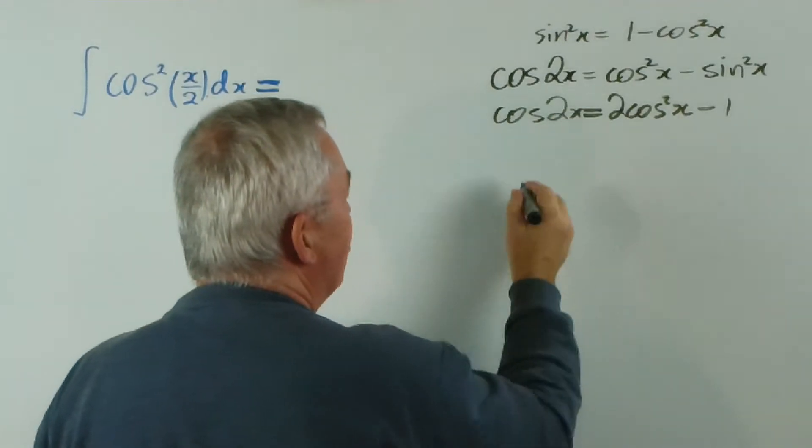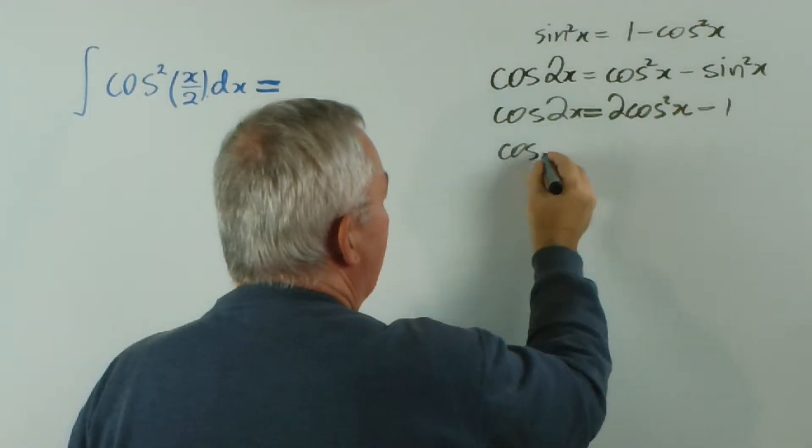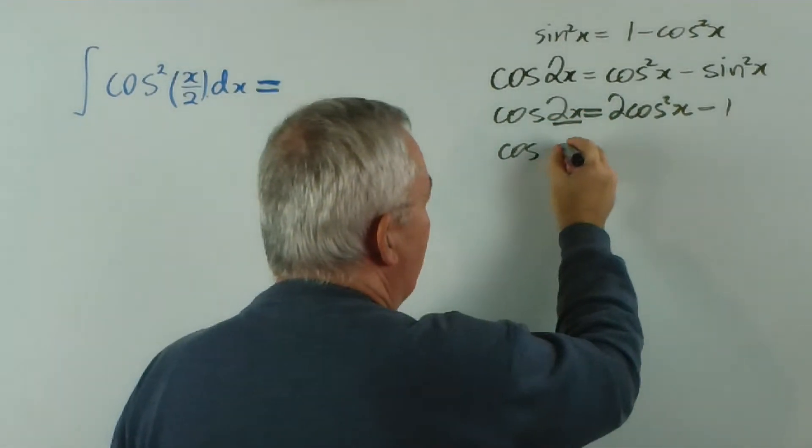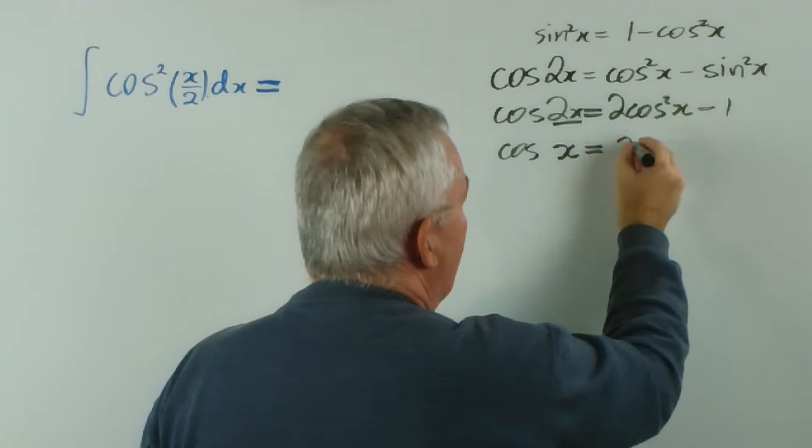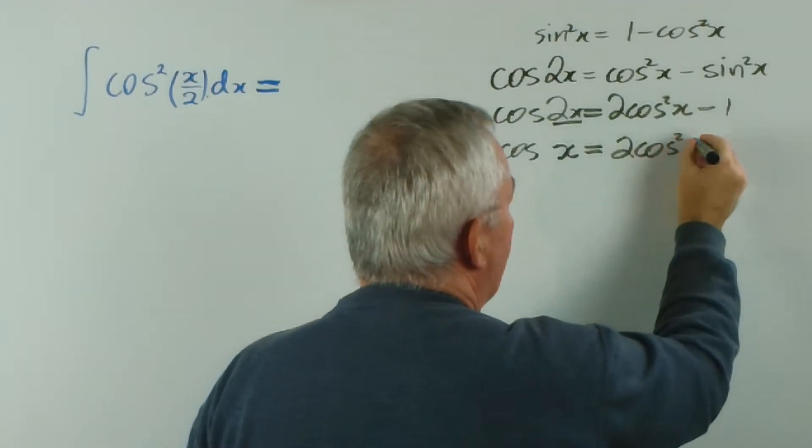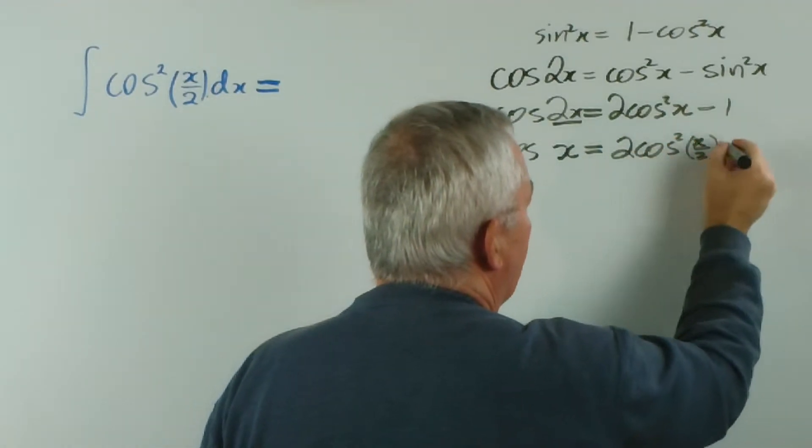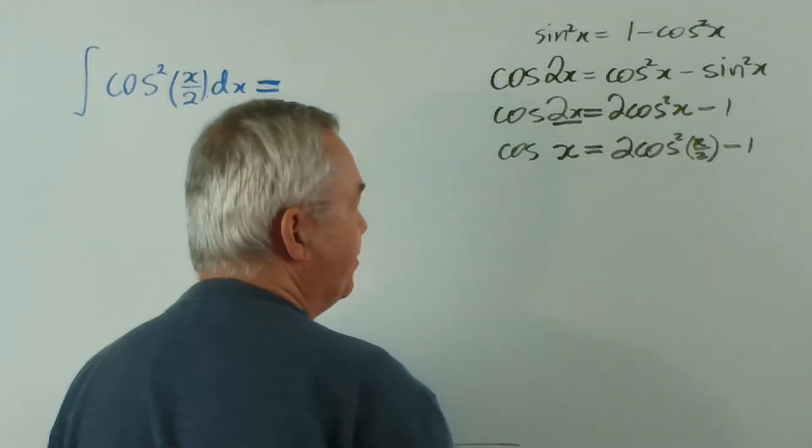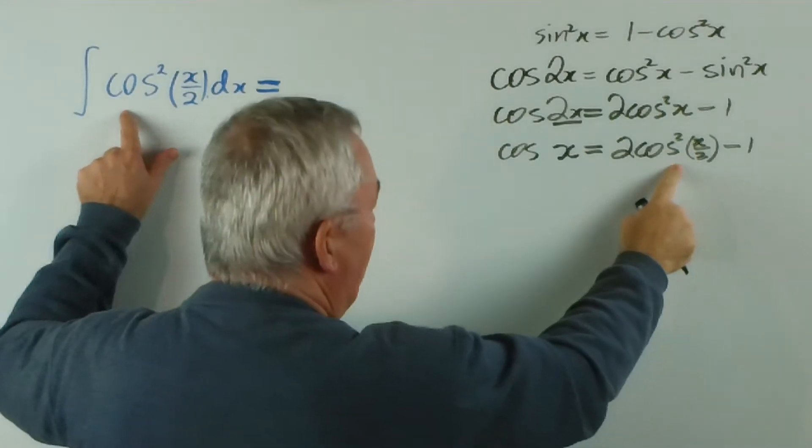Therefore, if that is true, then if we, instead of splitting the angle 2x, we split the angle x, we would get 2 cos squared x over 2 minus 1. That was halving the angle. That's what we want to integrate.